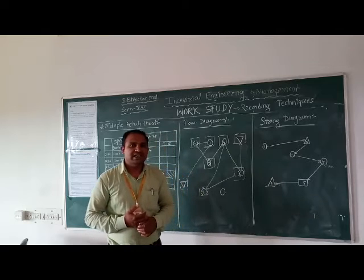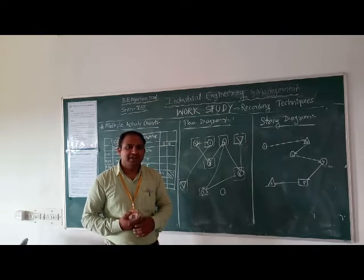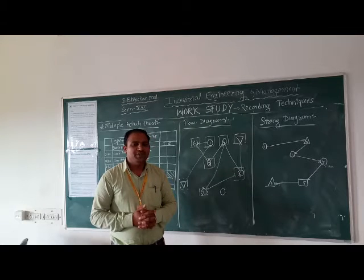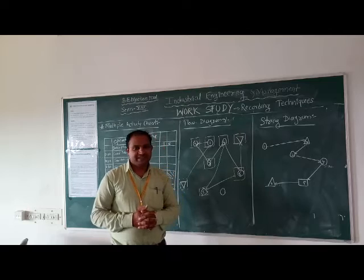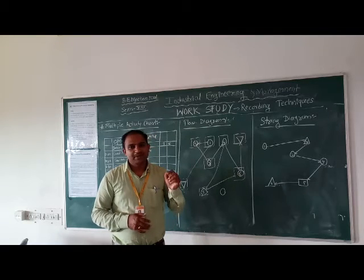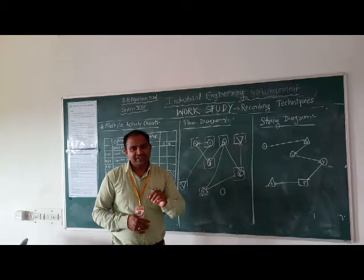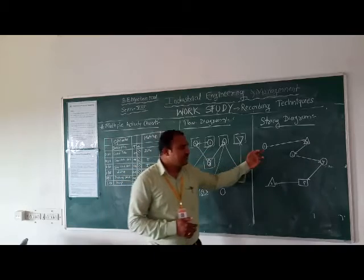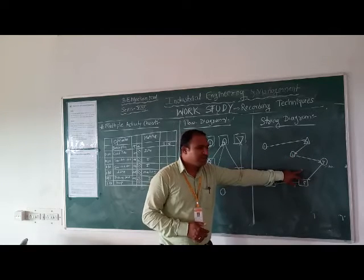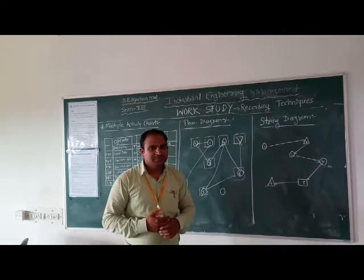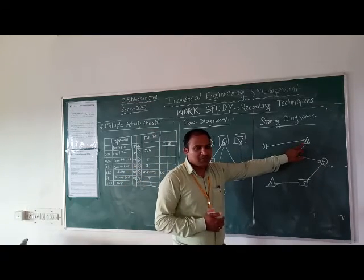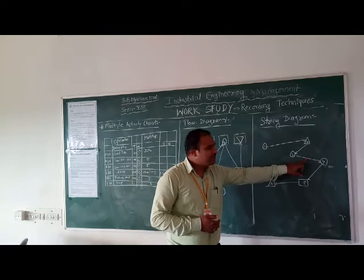The string diagram is another technique of flow diagram. Instead of operation symbols or various activity symbols indicated by arrows, here we use a measured length of string. The activities — operation, inspection, operation, operation, inspection, storage — are laid out, and the string is moved from the first operation through to storage, then to the third operation, fourth, fifth, and sixth operations.